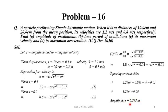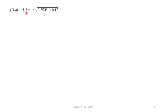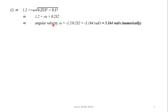Once we have the amplitude, we substitute r = 0.253 m into equation 1: 1.2 = ω√(0.253² − 0.1²) = ω × 0.232. Therefore the angular velocity omega is 5.164 radians per second.